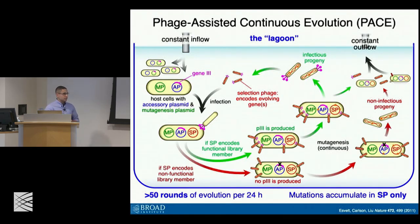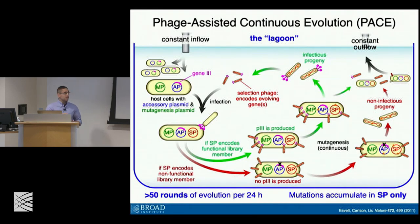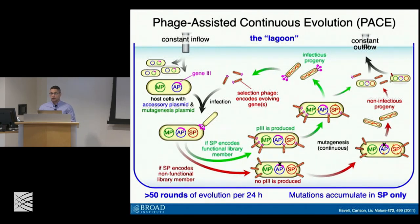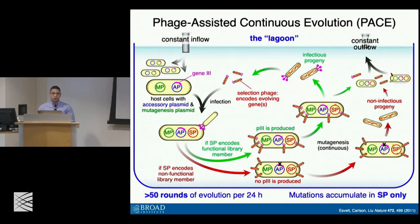Because of the nature of the system, the mutations accumulate only in the selection phage. Everything is subject to dilution, and we can control the rate such that it's faster than the replication of the bacterium but slower than the replication of the phage. On average, all mutations that enable passing the selection are retained in the SP, and nowhere outside of that.